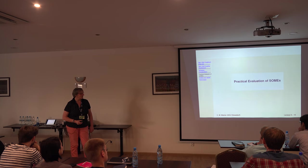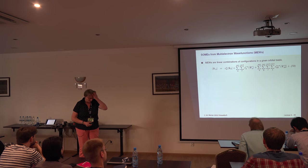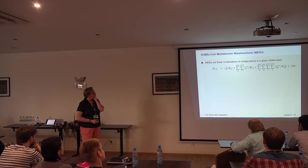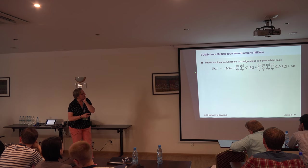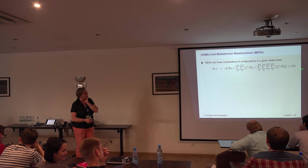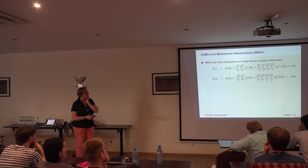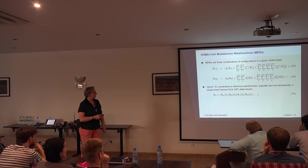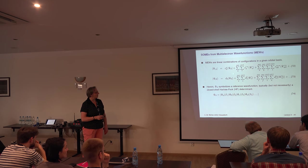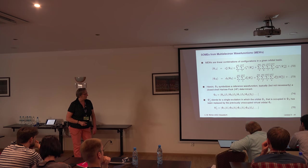To evaluate spin-orbit coupling matrix elements practically, you use a multi-reference configuration interaction expansion — one expansion for state A (say the singlet) and one for the triplet. You calculate the spin-orbit coupling term by term. Even if the first term is zero, you can have cross terms and so on.